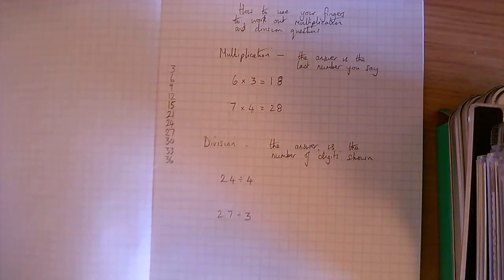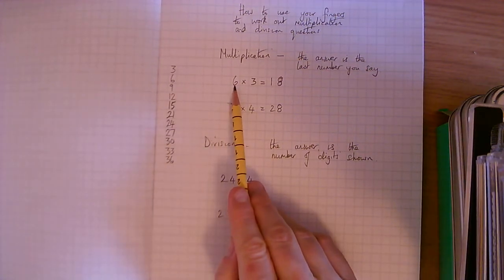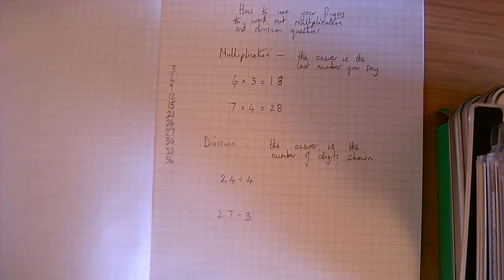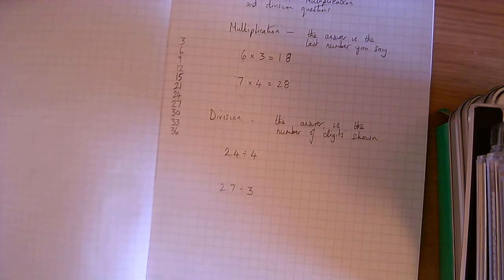The answer is the number that you say, the last number that you say. And you count up to the number here. The amounts of the lots of 3 or the lots of 4. How many lots of 3 there are? How many lots of 4 there are? Right, division.